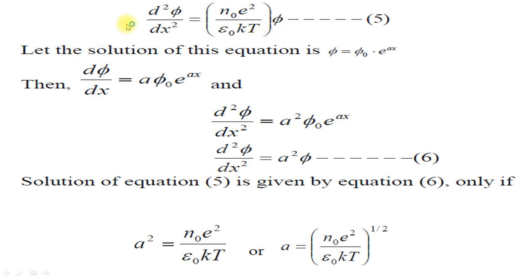Converting to a one-dimensional formula in radius: d²φ/dx² = (n₀e²/ε₀kT)·φ. Let the solution of this equation be φ = φ₀·e^(ax). On differentiating: dφ/dx = a·φ₀·e^(ax), and d²φ/dx² = a²·φ₀·e^(ax), which gives d²φ/dx² = a²·φ — this is equation number 6. The solution of equation 5 satisfies equation 6 only if a² = n₀e²/(ε₀kT), so a = [n₀e²/(ε₀kT)]^(1/2).